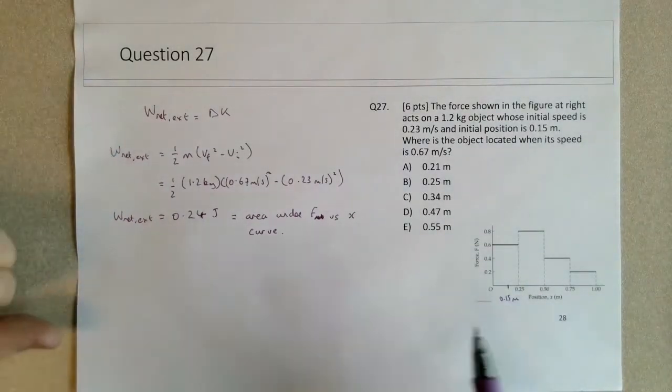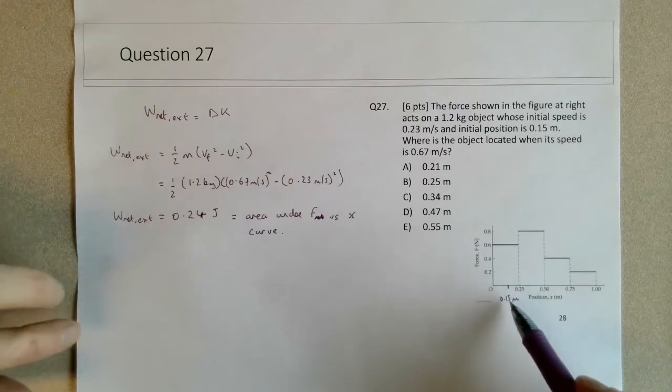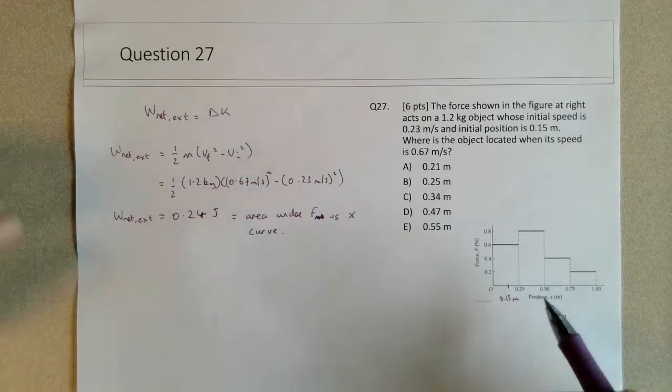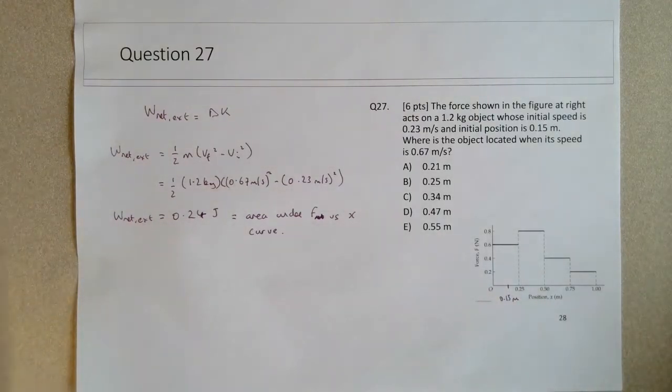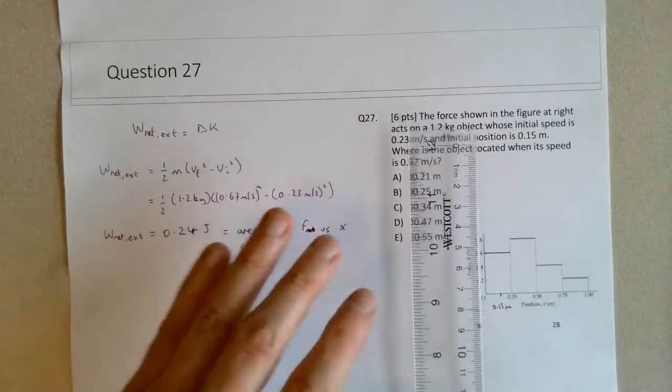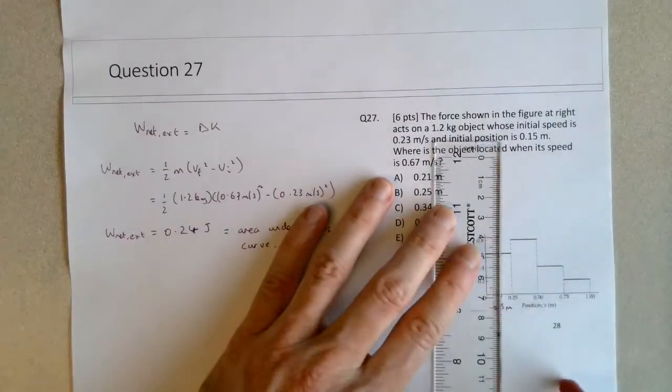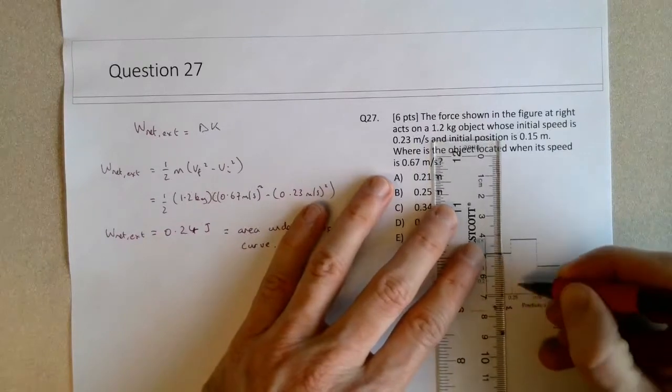Now, we know that the object will move to the right. So first, we want to consider how much work is done on the object as it moves from 0.15 meters to 0.25 meters, while the force is constant there.